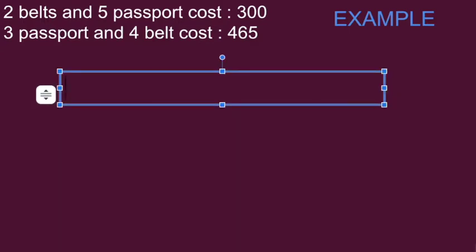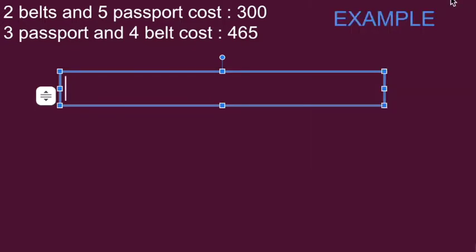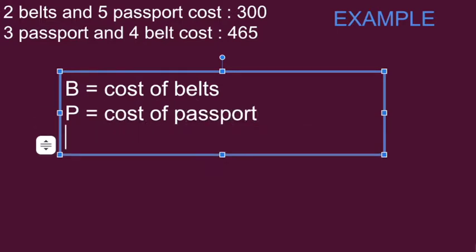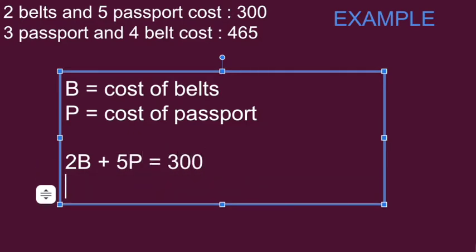Same as last time, first thing we're going to want to do is create a system of equations that matches our situation. So we're going to say B represents the cost of belts and P represents cost of a passport. Then I can write these equations: two times the cost of a belt plus five times the cost of a passport is $300, and four times the cost of belt plus three times the cost of a passport will be $465.